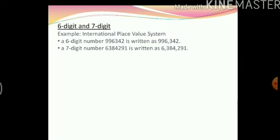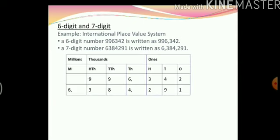Similarly, let us put these numbers in the international place value chart. The international place value chart has three numbers in both the first and second periods. So in the six digit number, the first comma is after three numbers and then there is no comma at all, because at the end of those three numbers the second period also finishes and the number ends. So the number looks like 996,342. For the seven digit number, the first comma is after three digits, and then after another three digits we have another comma. So the seven digit number will look like 6,384,291.